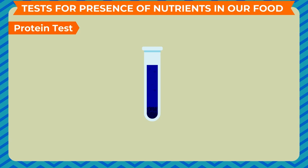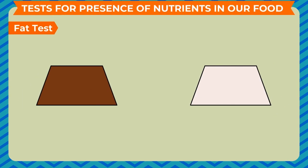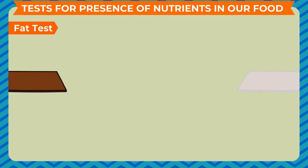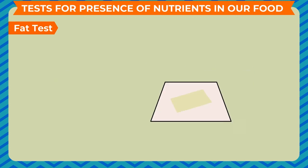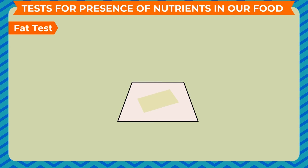You can also test other food items to check for the presence of proteins. Fat test: take a brown paper or white printing paper and put the food item on it. If the food is solid, the paper should be folded and the food item crushed within the paper, taking care that the paper does not tear. Leave the paper on the table for 10 to 15 minutes to let water present in the food evaporate. Using a glass rod, remove and clean the food from the paper. Lift and hold the paper in front of light — you will see an oily patch, which confirms the presence of fat.